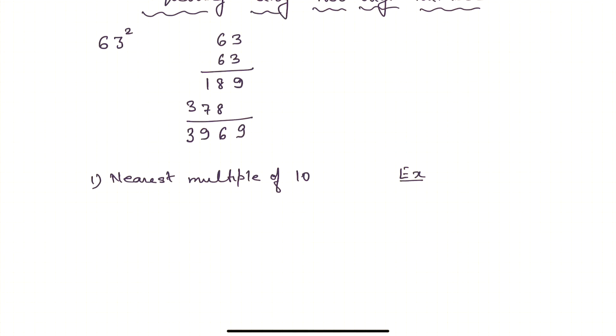Then find out the gap between the number and the nearest multiple of 10. So what is the gap between 63 and 60? You do 63 minus 60 equals 3.